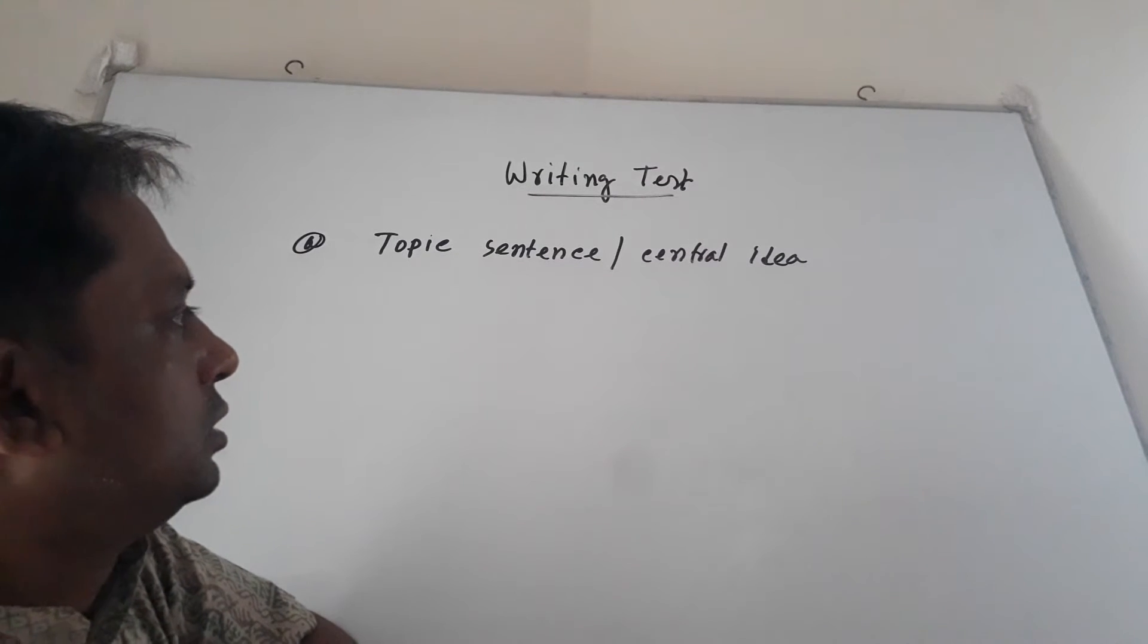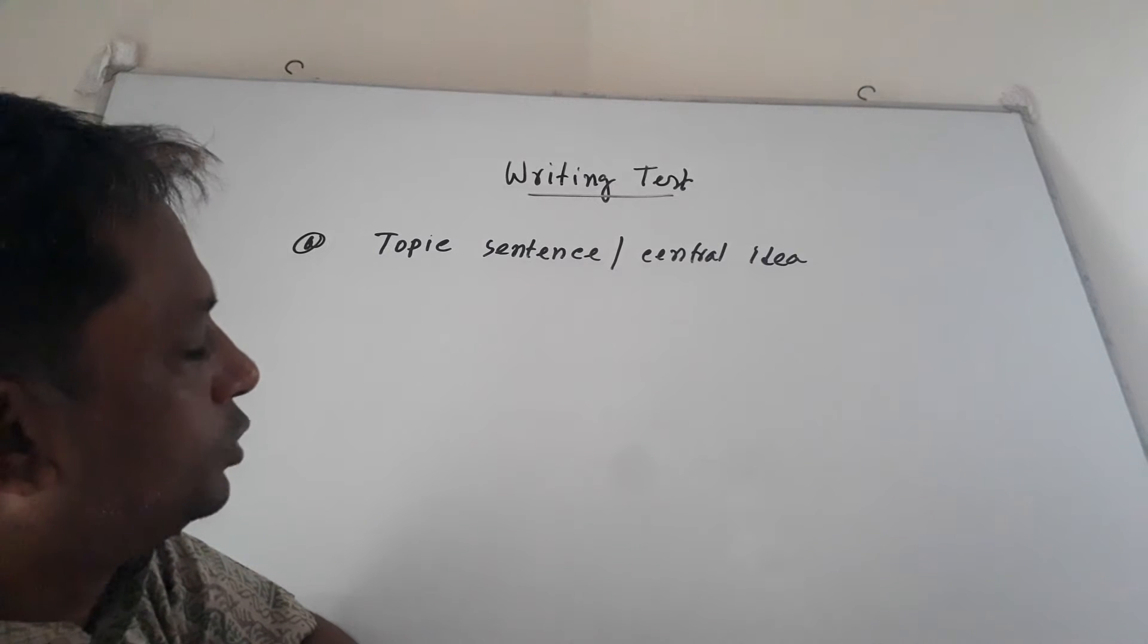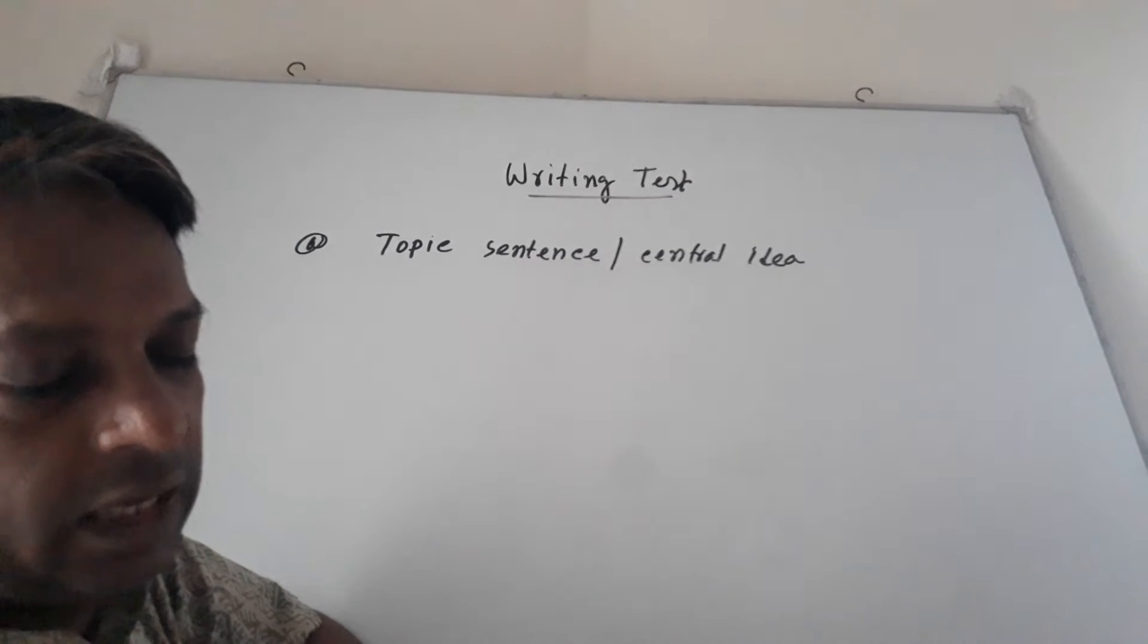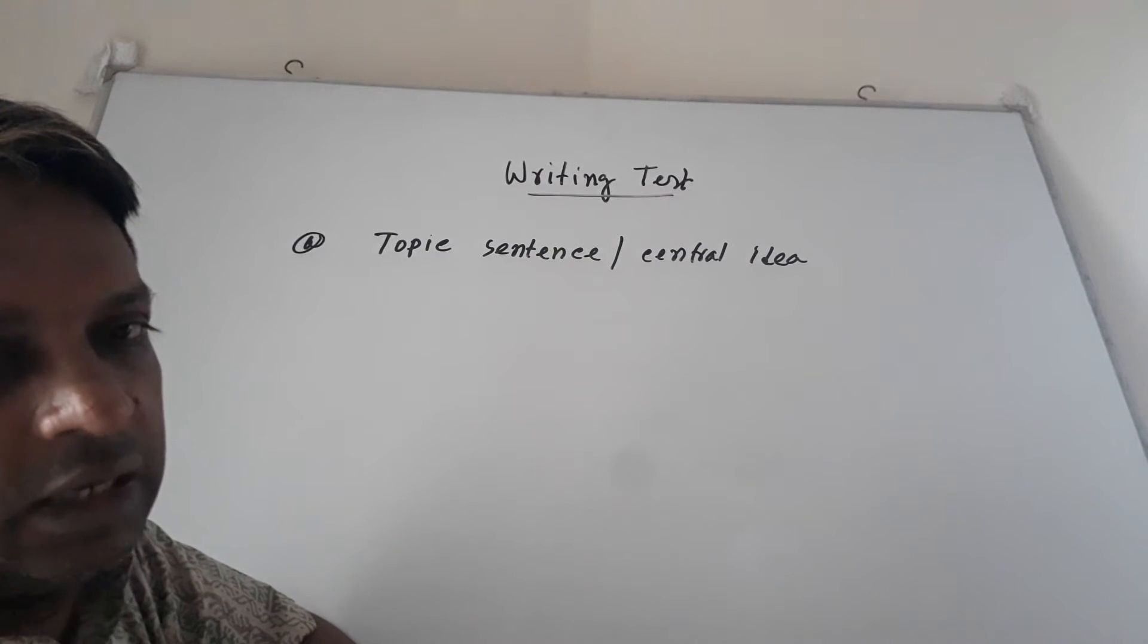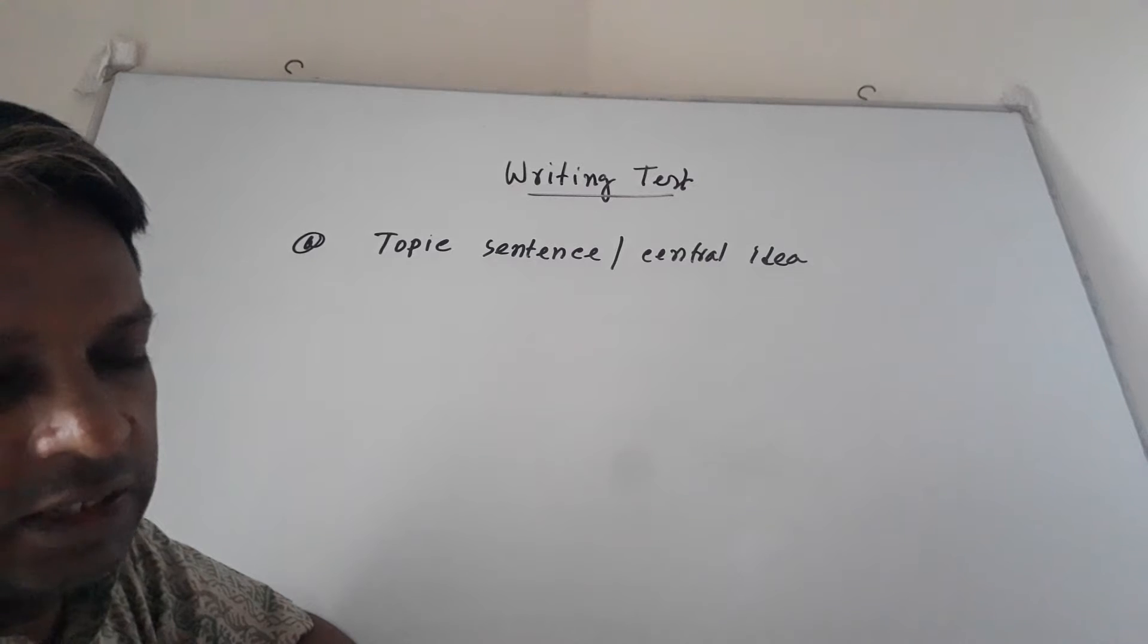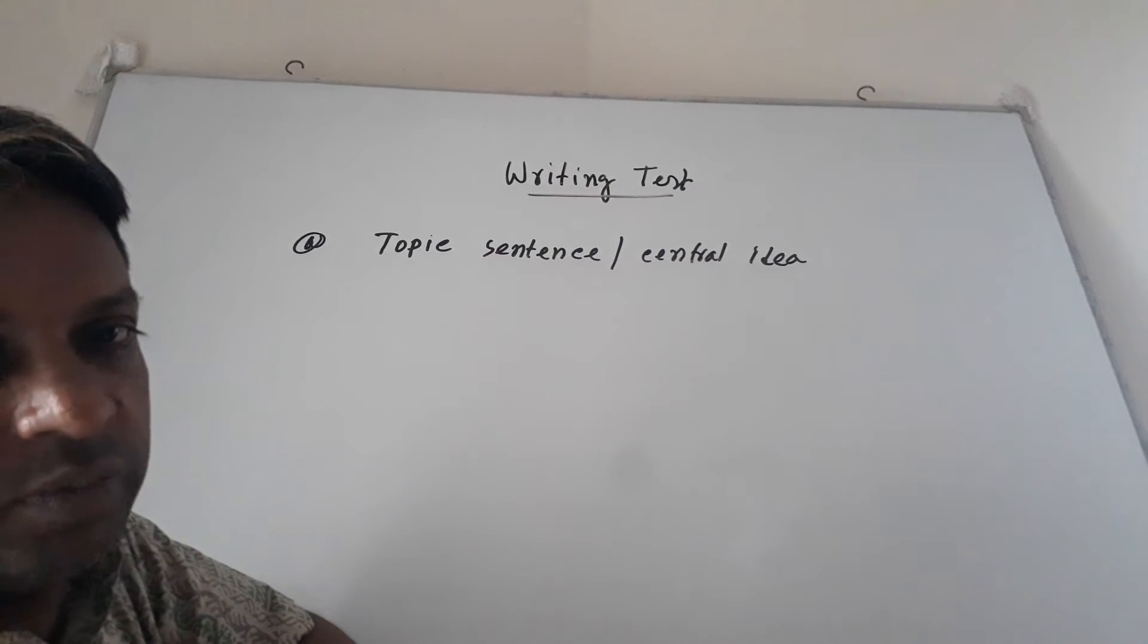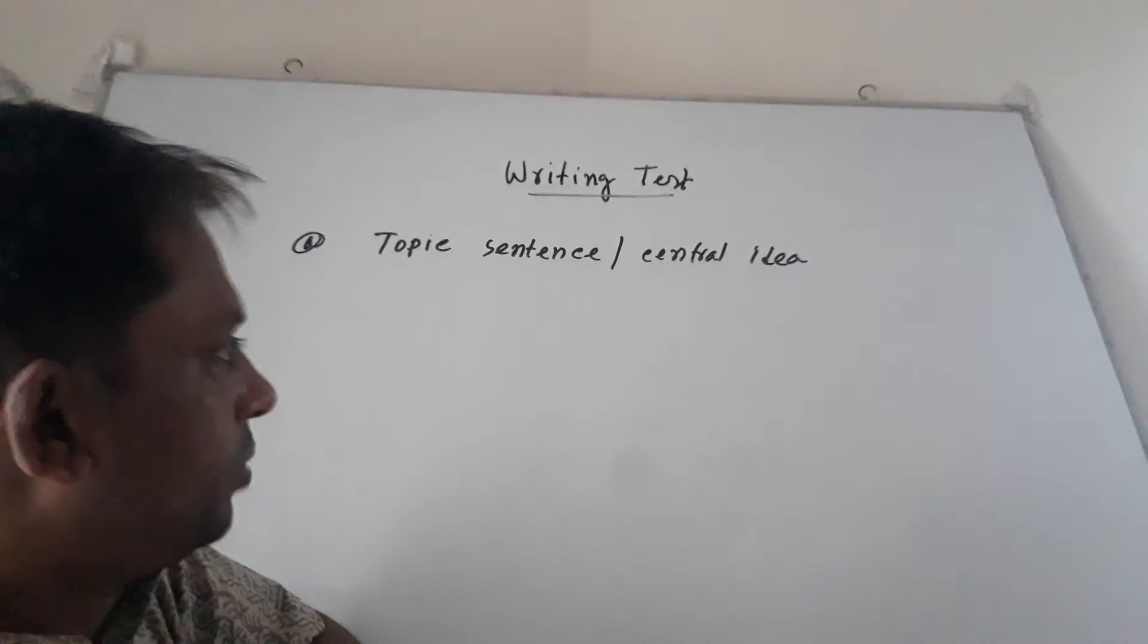Suppose you write a paragraph about street accident. Here you should explain what you mean by street accident. You must clarify what you are going to write and what you will represent in your paragraph.